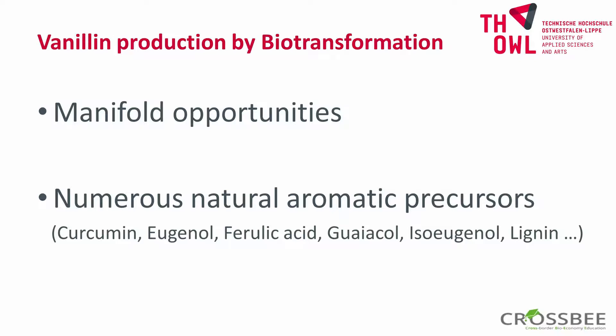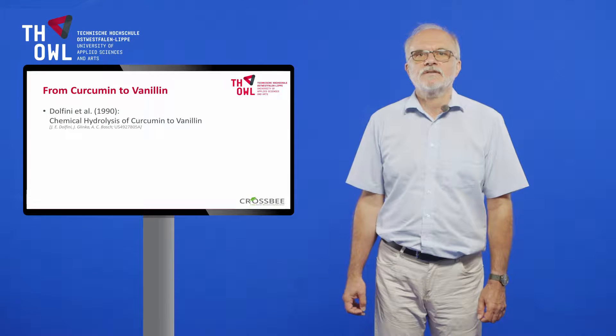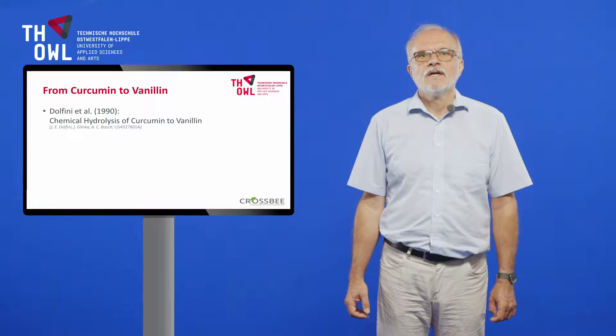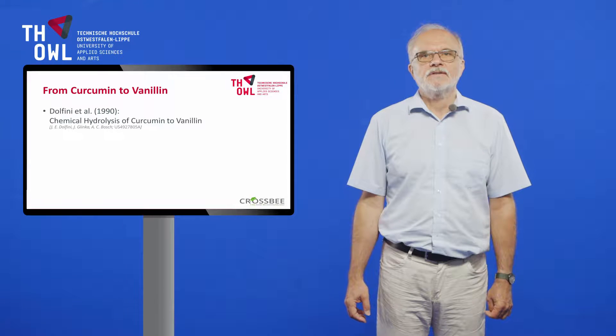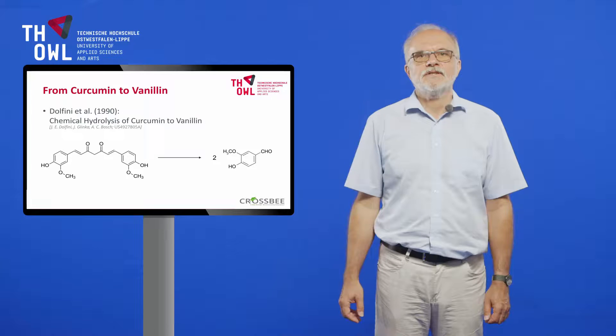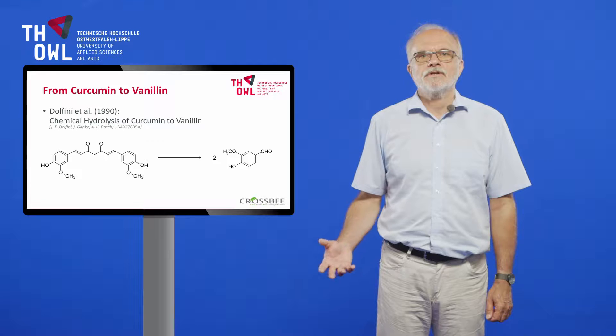The ways to vanillin by biotransformations are manifold. There are numerous natural aromatic molecules which can act as a precursor for the formation of vanillin, and for all of these processes methods have been described. In the 1990s, Dolephini et al. from the Mallinckrodt company filed a patent for hydrolysis of curcumin to obtain vanillin. Curcumin is the main compound of turmeric oleoresin from the herb Curcuma longa and is used as a yellowish-orange dye in foodstuffs. As you can see when looking at the chemical structure, it is possible to obtain two molecules of vanillin from one molecule of curcumin.